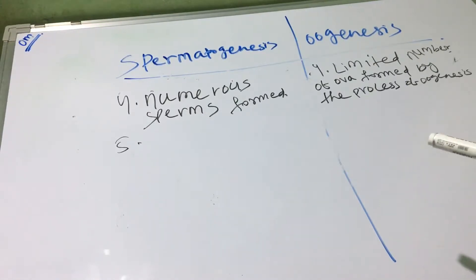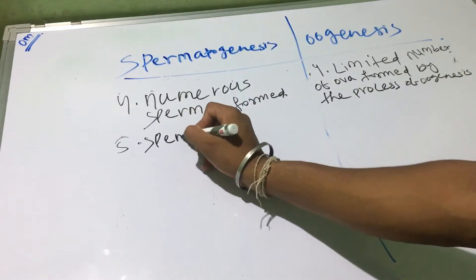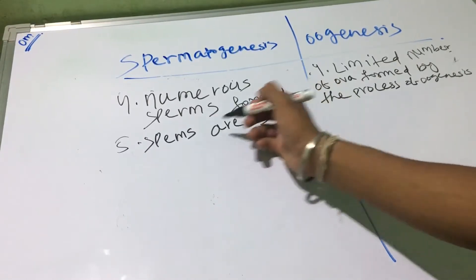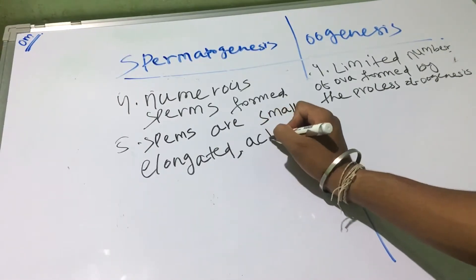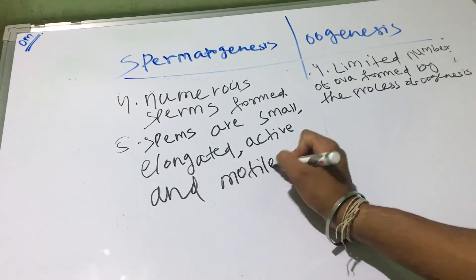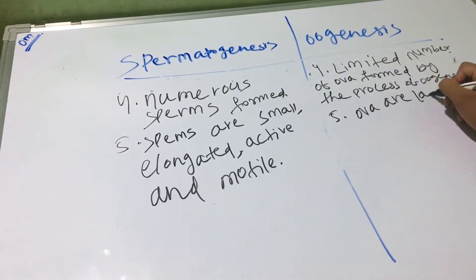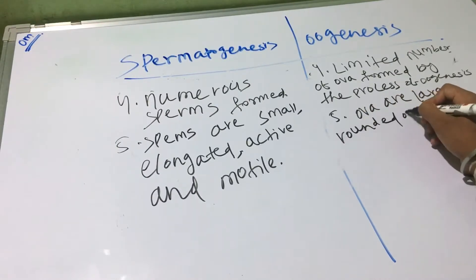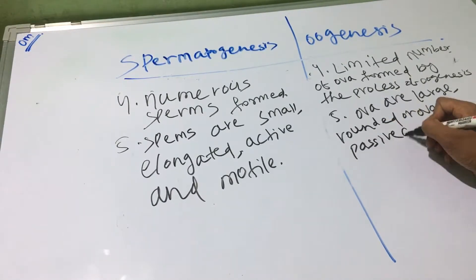The fifth point: in case of spermatogenesis, the sperms are small, elongated, active, and motile. In case of oogenesis, the ova are large, rounded or oval, passive, and non-motile.